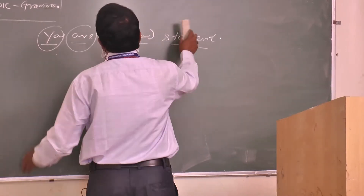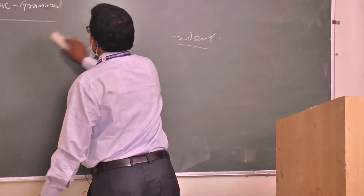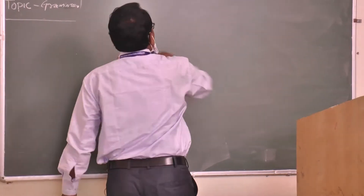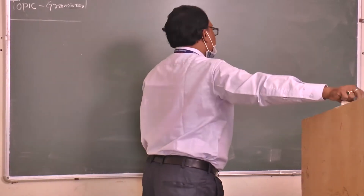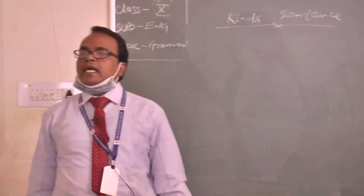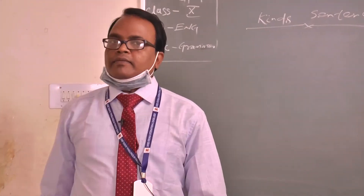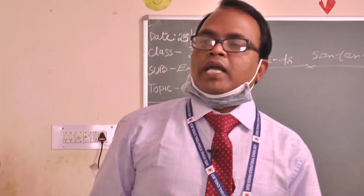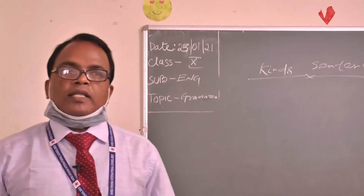Then we come to the kinds of sentences. Types of sentences. How many kinds of sentences are there? Hands up. Students answered: one, two, five, twelve, thirty-five.